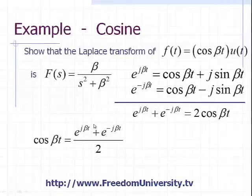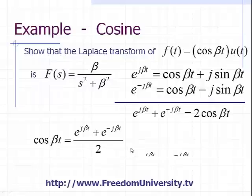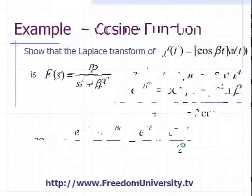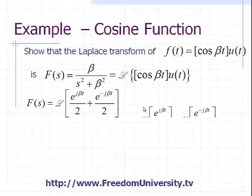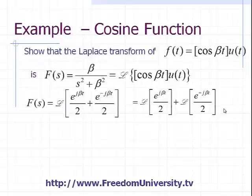Now we'll break up the sum into two different terms so we can apply the concept of linearity. And now we have these two terms, e to the j beta t divided by 2 plus e to the minus j beta t divided by 2. So when you apply the concept of linearity, the Laplace transform of each of these two terms is the Laplace transform of each of these terms.